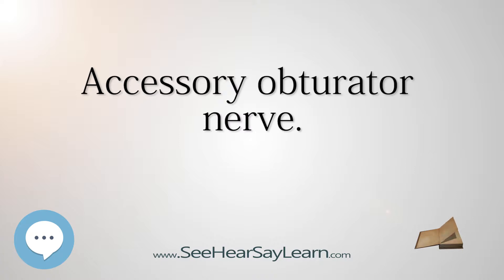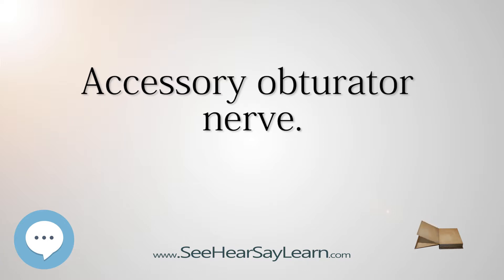Recent evidence supports that this nerve arises from dorsal divisions. It descends along the medial border of the psoas major, crosses the superior ramus of the pubis, and passes under the pectineus, where it divides into numerous branches.